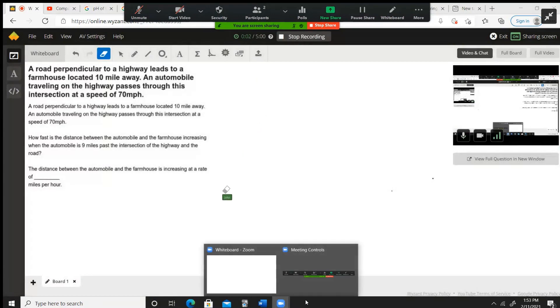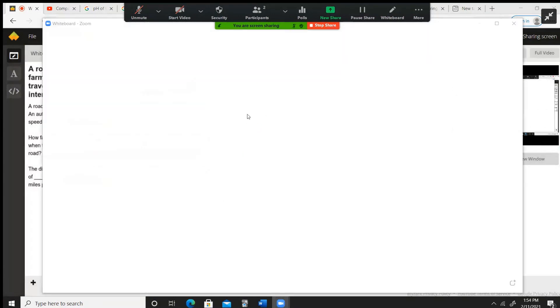Alright, so I'm going to pull up my Zoom meeting here. We've got a highway; the car is traveling along here at 70 miles per hour. And then over here we've got a farm. The farm is 10 miles away.